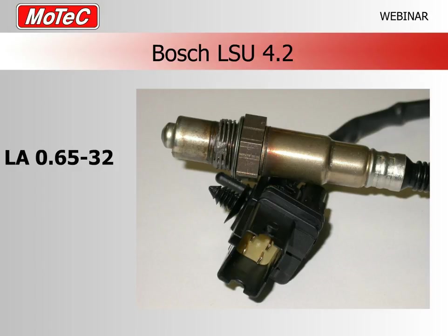The next sensor is the Bosch LSU 4.2. The sensors themselves look very similar down at the thread and body. You can identify the 4.2 because it's written on the sensor, and its connector is an oblong shape similar to the NTK but black. Like other Bosch sensors its lambda range is 0.65 to lambda 32.